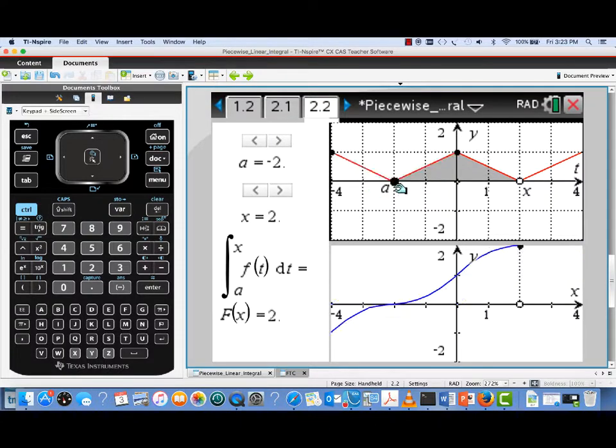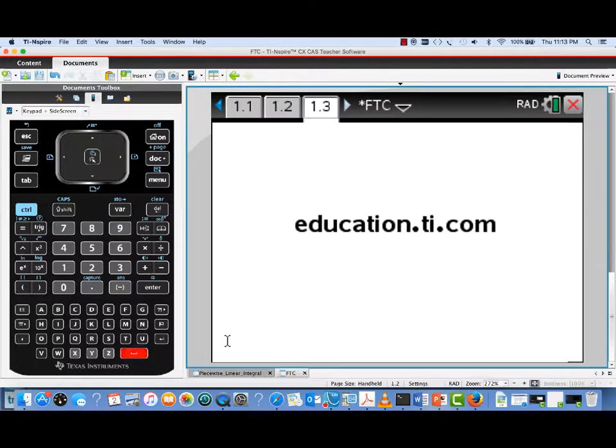Here's something neat. Notice that I can actually change the entire piecewise linear function by simply grabbing one of these black points and moving it. That means this file can be used to do a whole range of examples like this. For other tech videos and resources like this one, visit education.ti.com.